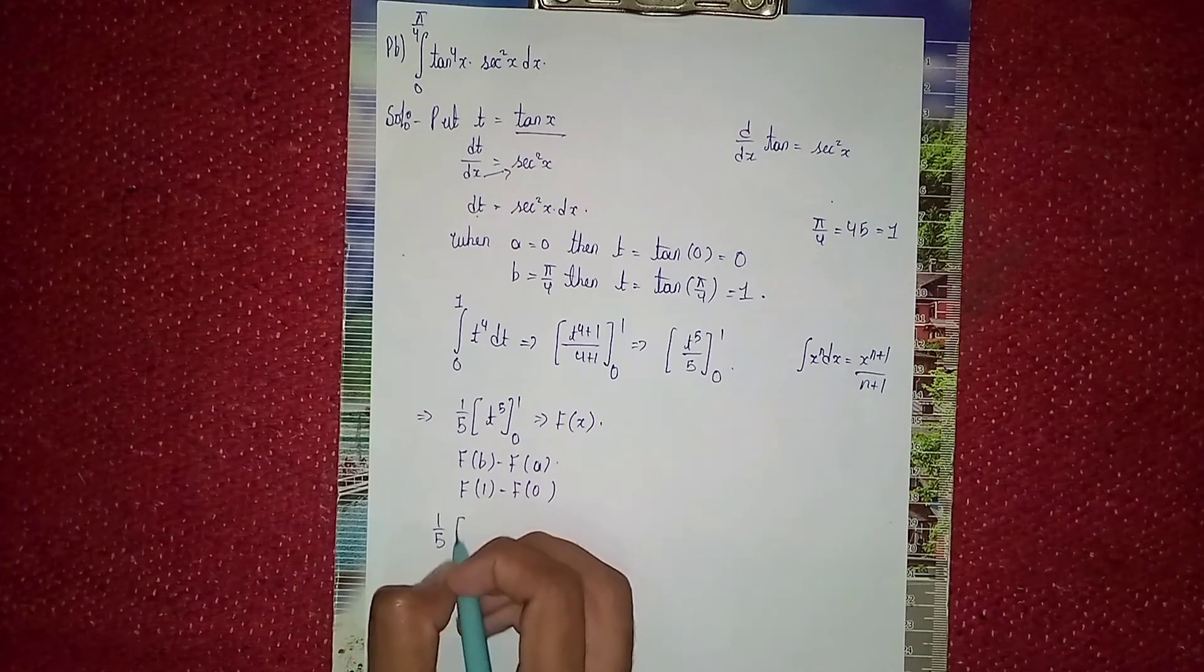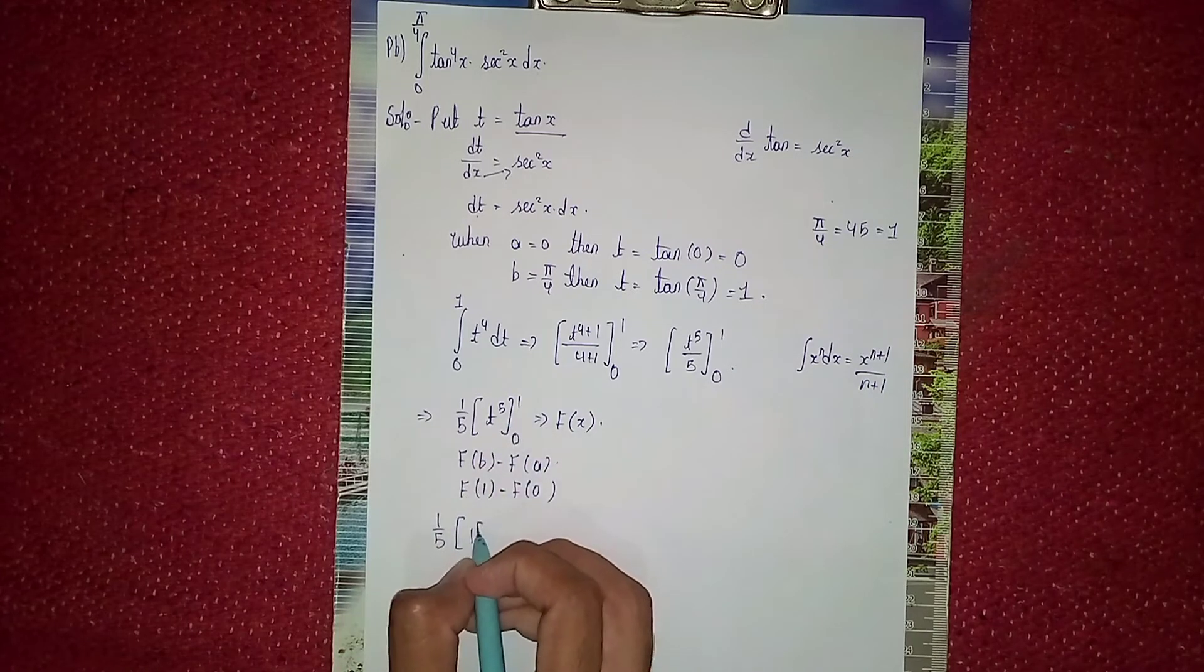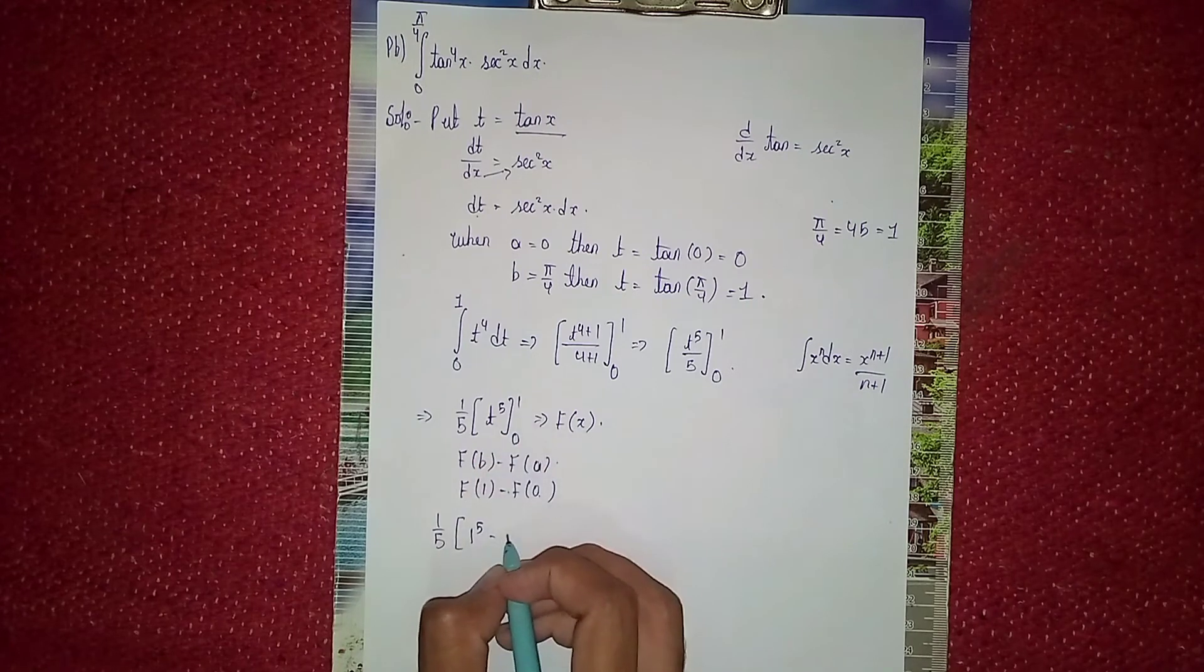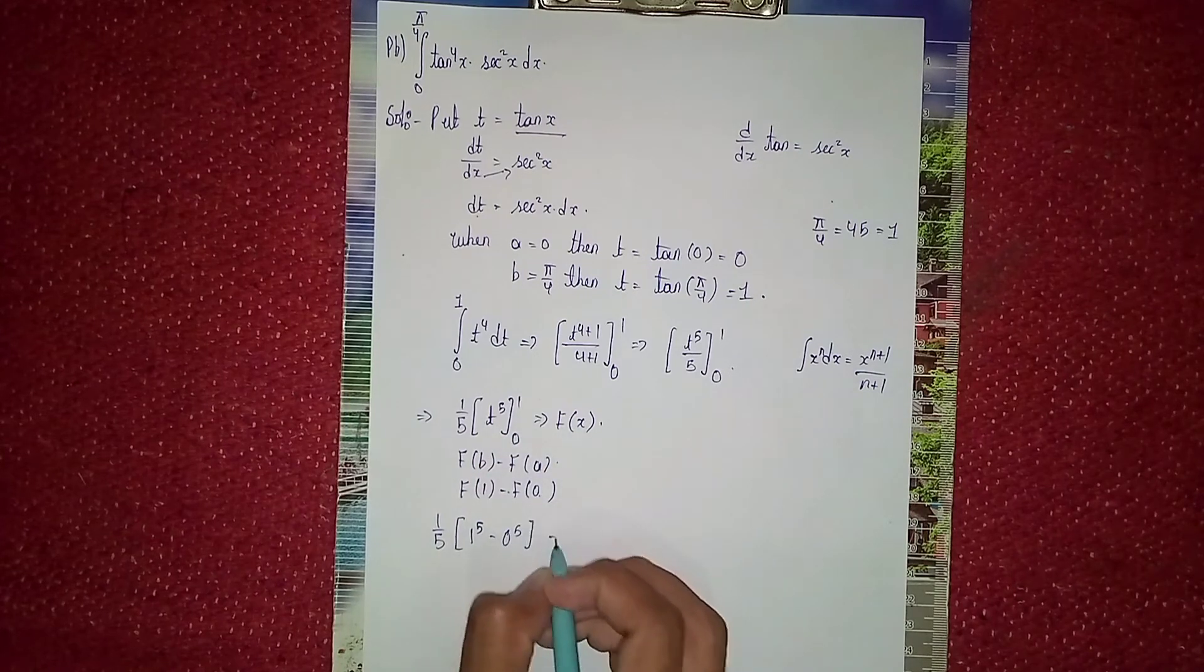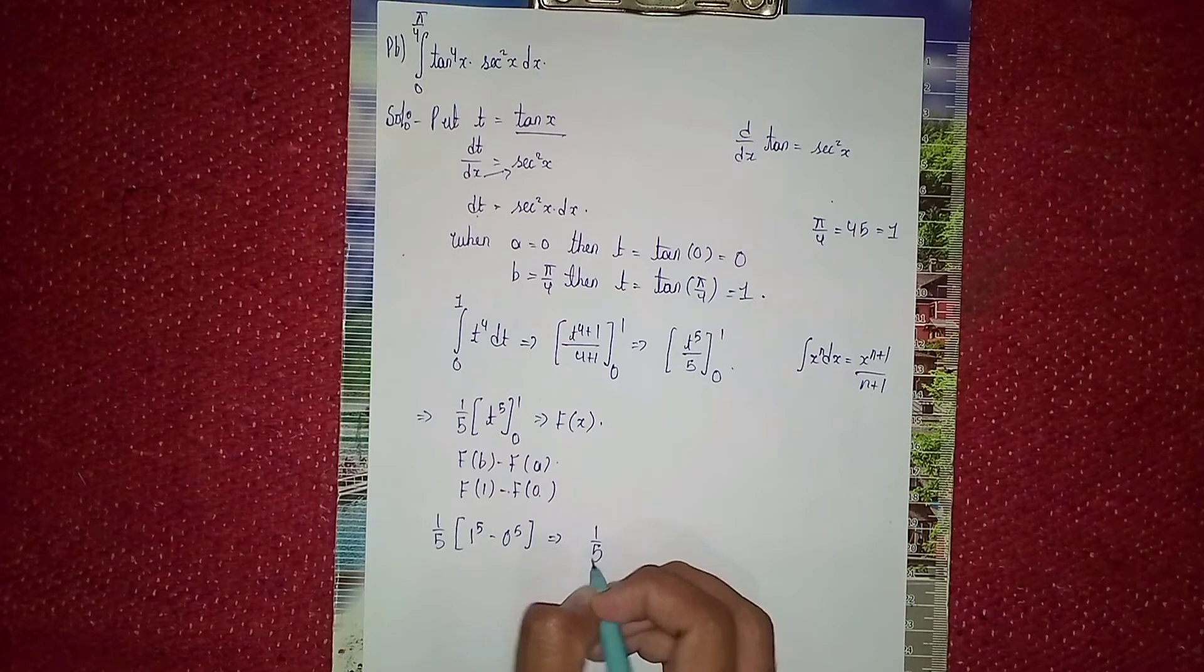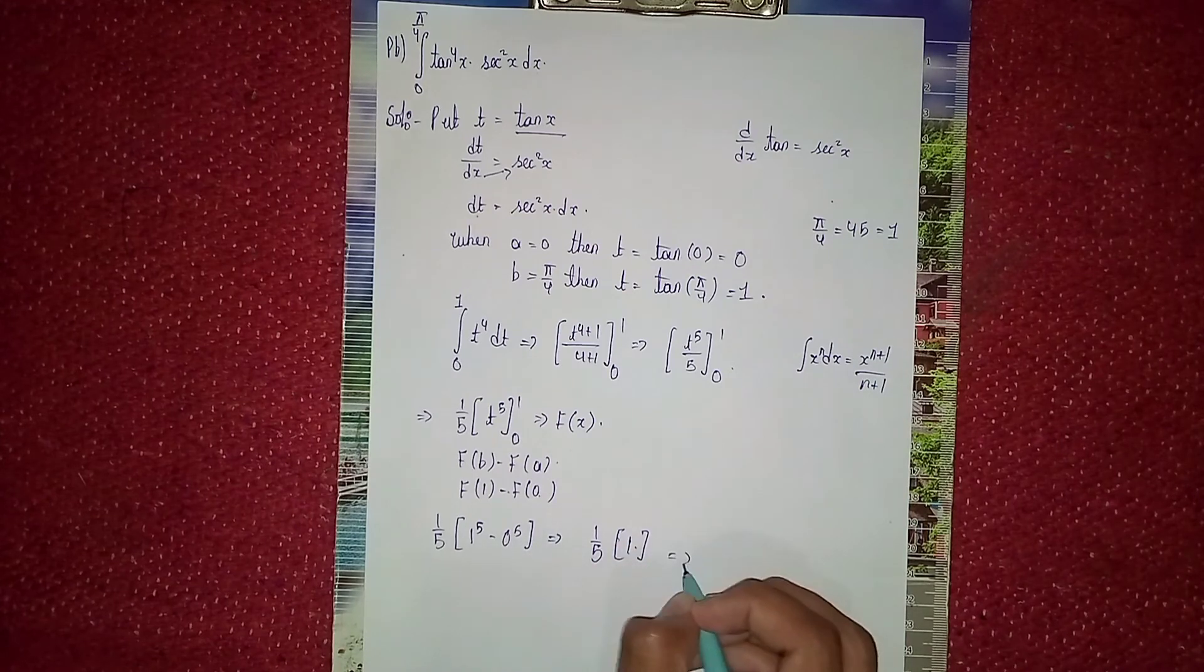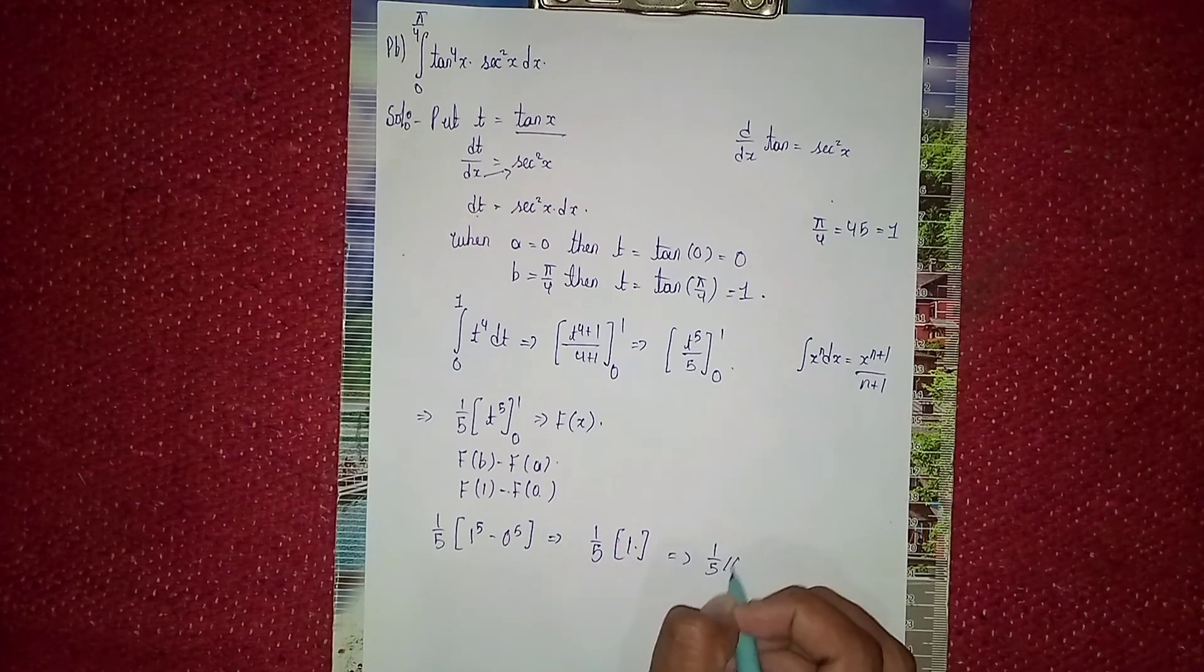Now substitute: (1/5) times (1^5 minus 0^5). This becomes (1/5) times (1 minus 0), which equals 1/5. This is the answer. Thanks for watching.